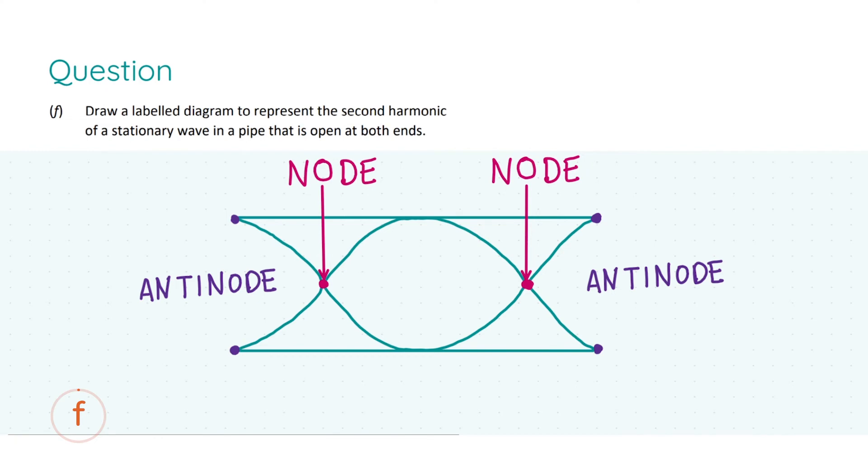Part f: we're moving on to the topic of sound. We're asked to draw a labeled diagram to represent the second harmonic of a stationary wave in an open pipe. Because it's an open pipe we're going to have two anti-nodes at the end. It wouldn't even make sense if you try drawing a pipe open at both ends with a node at the end, it just wouldn't look right.